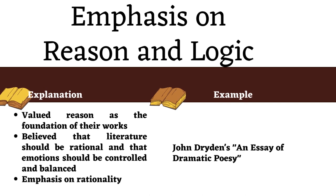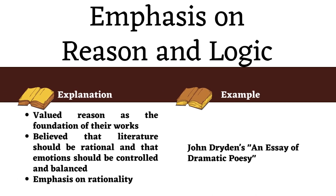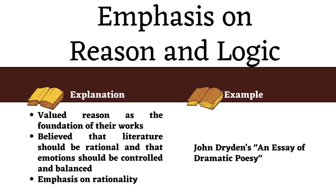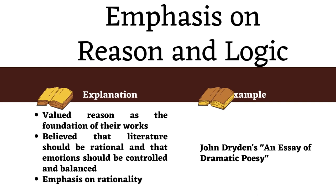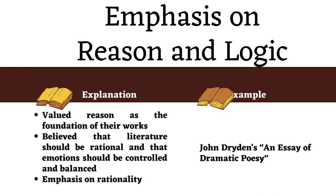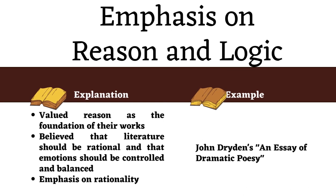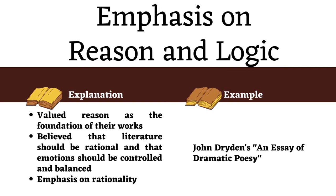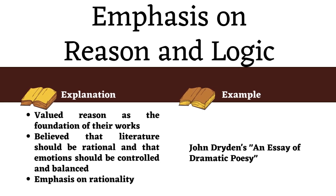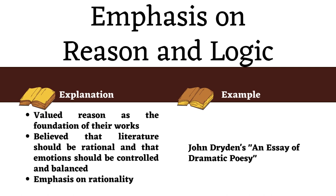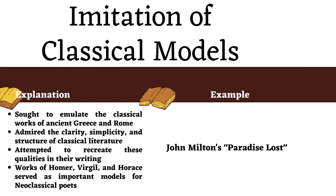Emphasis on reason and logic: next, we encounter the neoclassical emphasis on reason and logic. Writers of this era valued rationality as the foundation of their works, aiming to control and balance emotions. This emphasis on rationality was a response to the passionate and turbulent literary expressions of the previous era. In John Dryden's An Essay of Dramatic Poesy, he argues for the importance of reason in drama, contrasting it with the irrational and chaotic elements of the theatre.